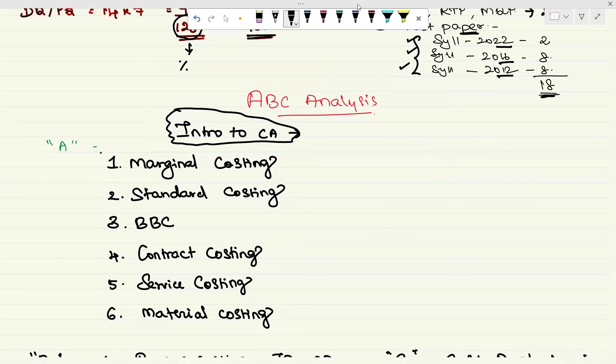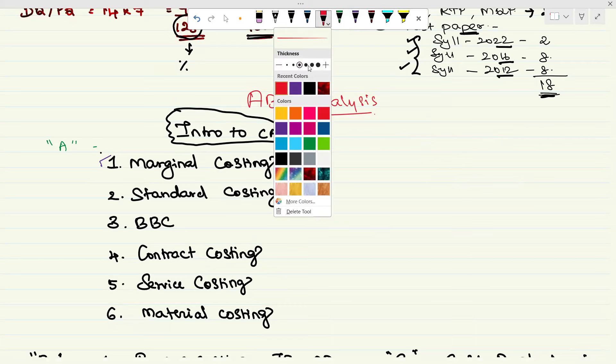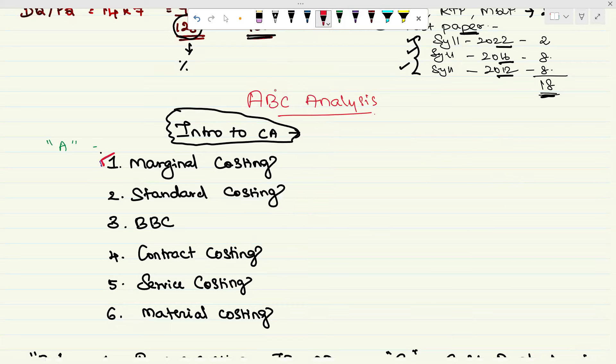Now come to the order for your exam point of view. First go to marginal costing, then standard costing, then BBC. 30 percent is done and dusted. For those writing group two, you are having an advantage. Then come to contract costing, service costing, and material costing. You may expect around 21 marks to 24 marks plus MCQ, somewhere around 8 marks.